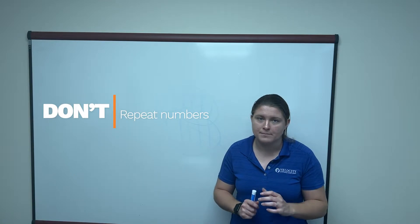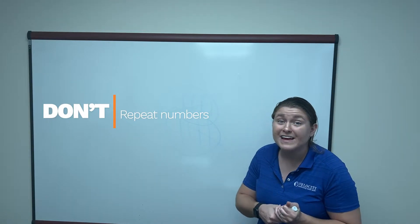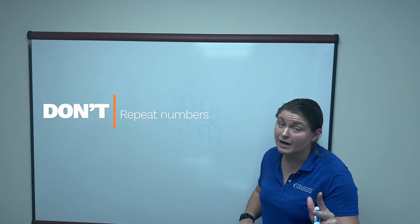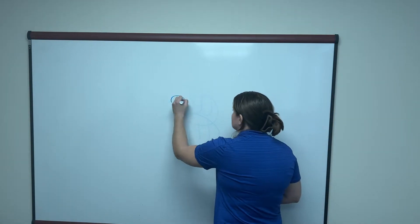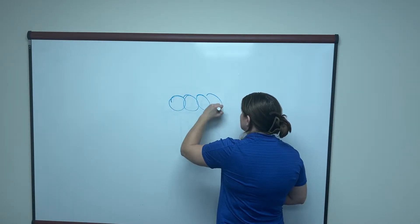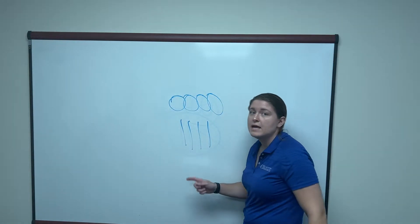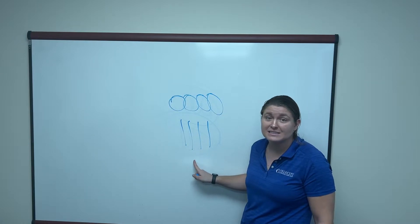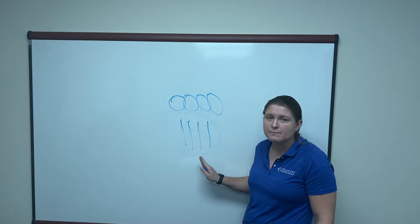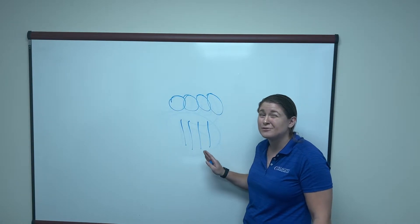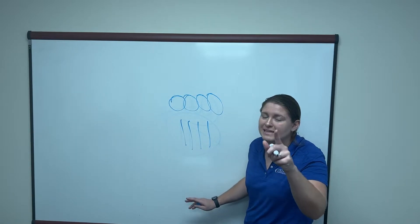Next, do not repeat numbers. So one that is highly used, two actually that are highly used, that's going to be zero, zero, zero, zero, straight goose eggs, one, one, one, one. Hackers can guess this and they know that people use this because it's easy to remember, but it's also easy to hack.